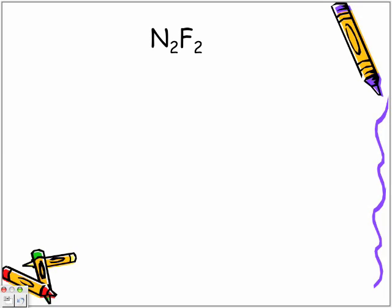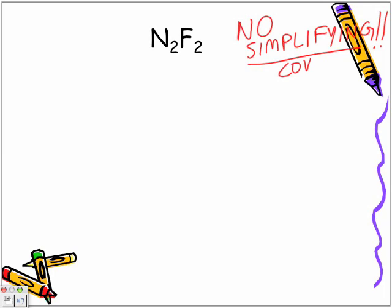N2F2. Now, normally in the ionic compounds, we would be simplifying something as follows, N2F2. But in covalent compounds, there's no simplifying. There is no simplifying, so we keep it as N2F2. Remember, no simplifying covalence.